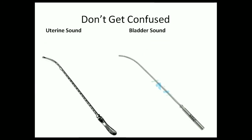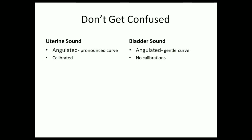Don't get confused between a uterine sound and a bladder sound, which look alike. Both are angulated, but the uterine sound has a pronounced curve and a bladder sound has a gentle curve. The uterine sound is calibrated, whereas the bladder sound has no calibrations on it.